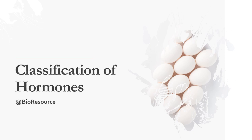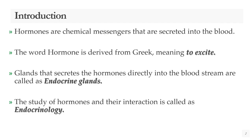Welcome back to the channel. In this video we are going to discuss the classification of hormones. Hormones are the chemical messengers that are secreted into the blood, and the word hormone is derived from the Greek meaning 'to excite.' The glands that secrete hormones directly into the bloodstream are known as the endocrine glands, and the study of hormones and their interactions is called endocrinology.